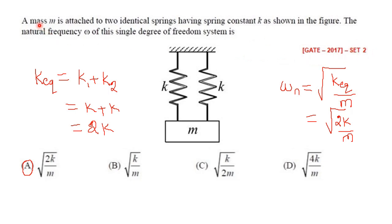Gate 2017 question: a mass m is attached to two identical springs each with spring constant k. The natural frequency ω_n of this single degree of freedom system is? Springs are in parallel: k_equivalent = k + k = 2k. Therefore ω_n = √(2k/m). Answer: option A.